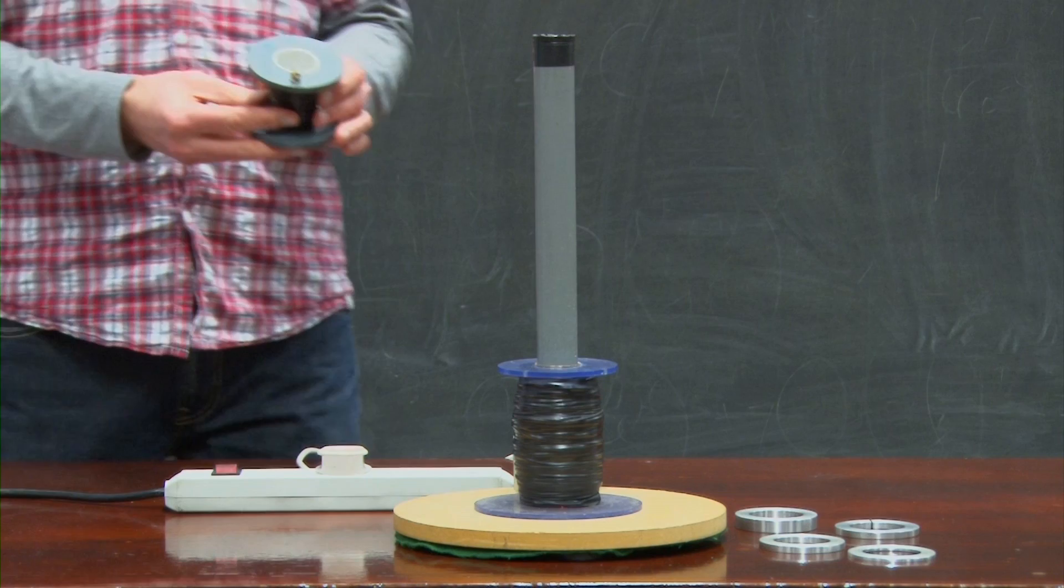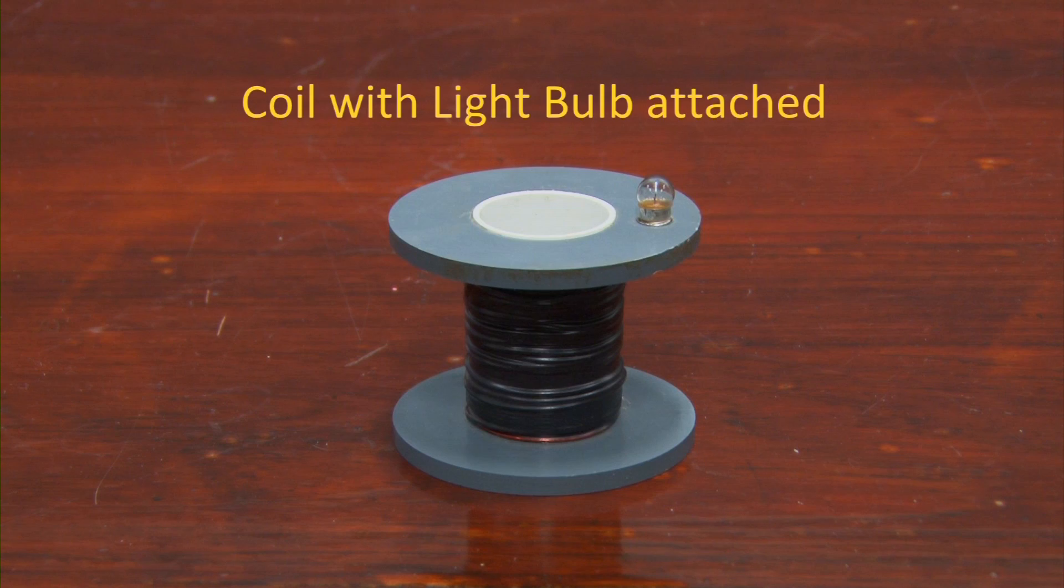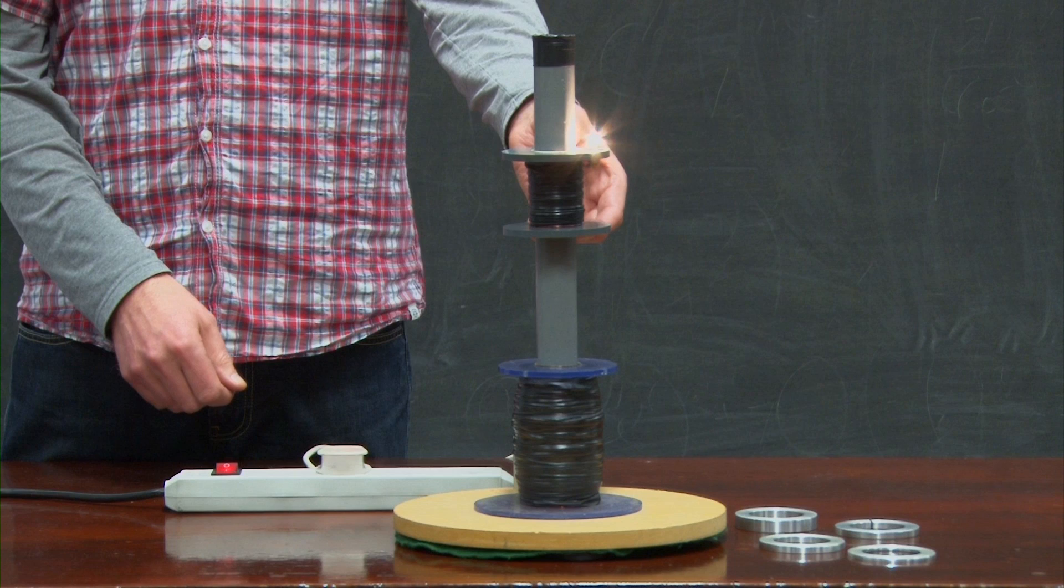First, a simple demonstration of Faraday's law. A light bulb is wired in series with a second coil of wire. When the current is switched on, the bulb lights up.